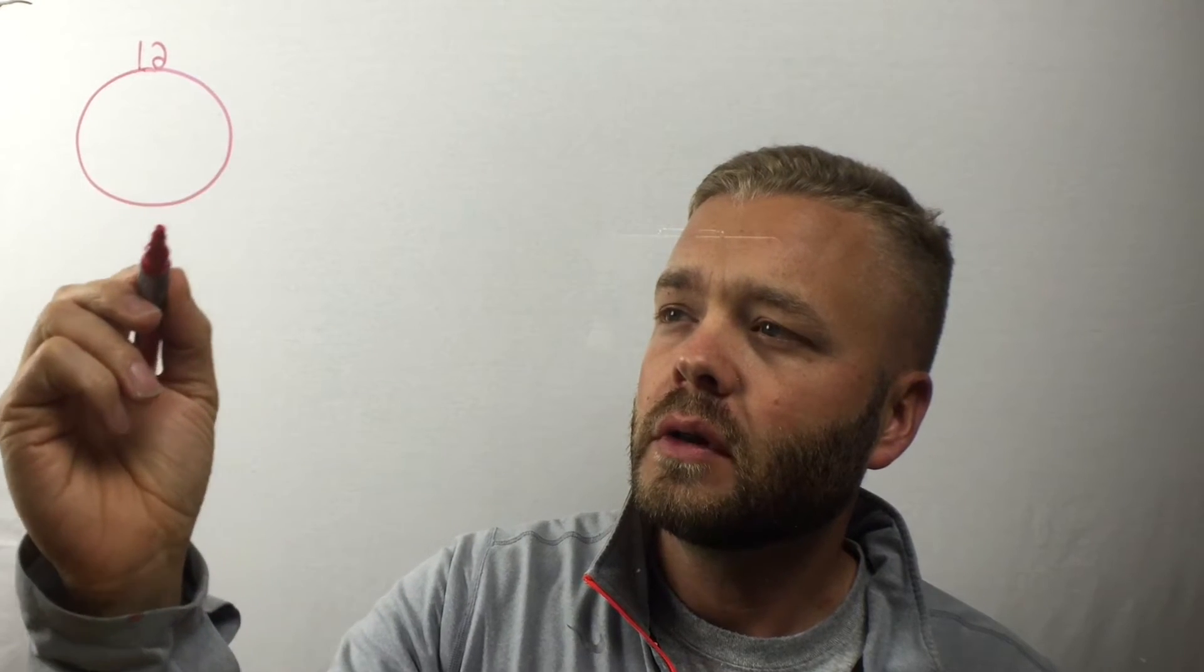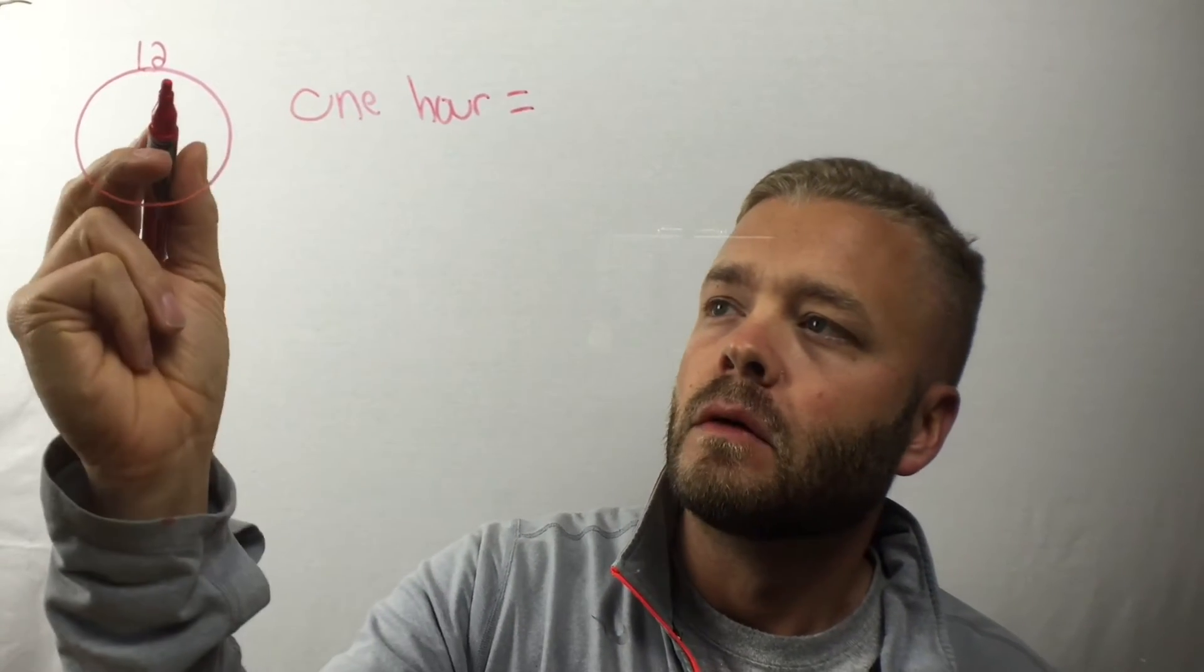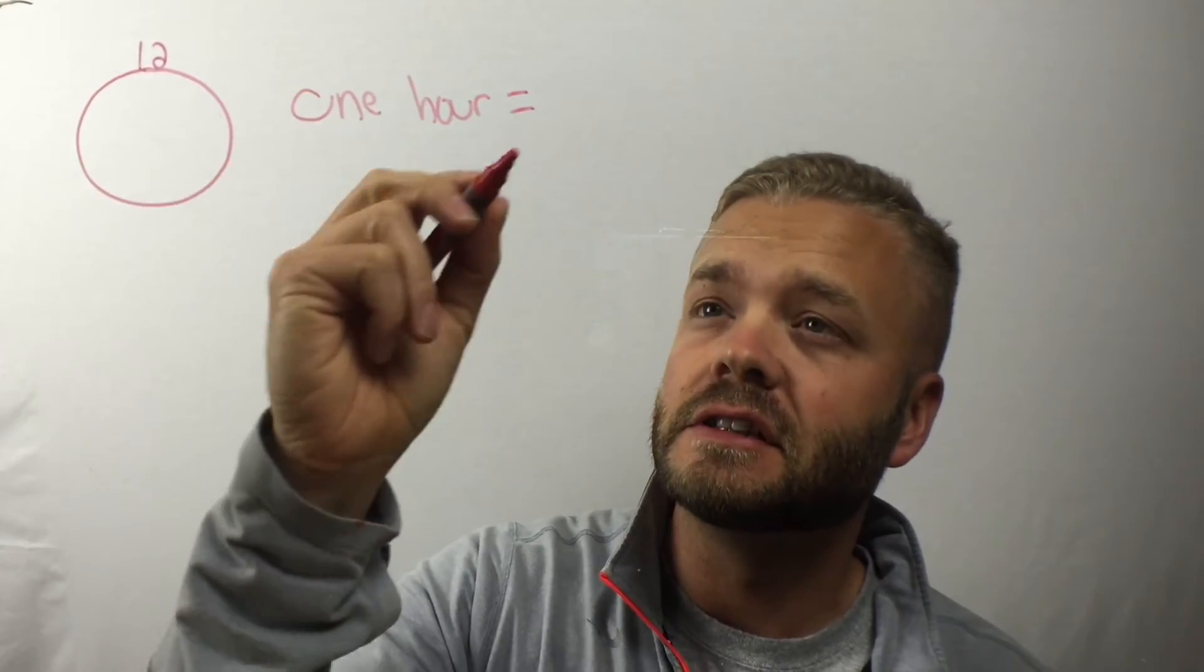At the top of every clock, there's a 12, right? If you start at the 12 and go all the way around the clock, you have just gone one hour. One full hour is 60 minutes.